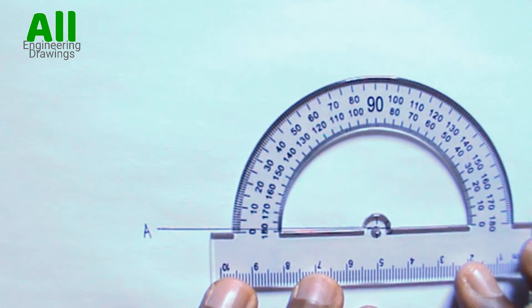Next, you have to construct the given angle. To do so, place your protractor on point B.